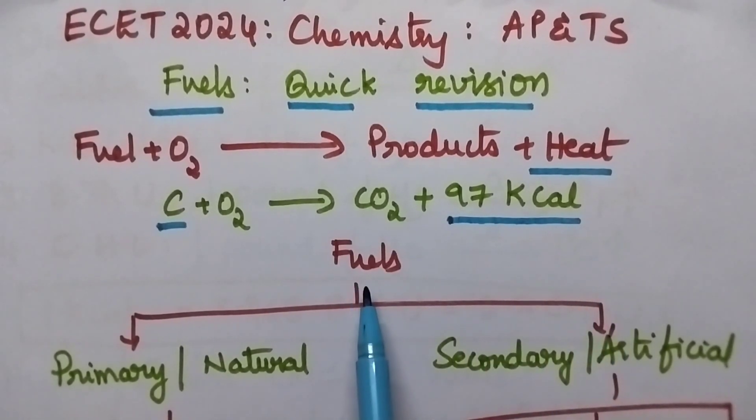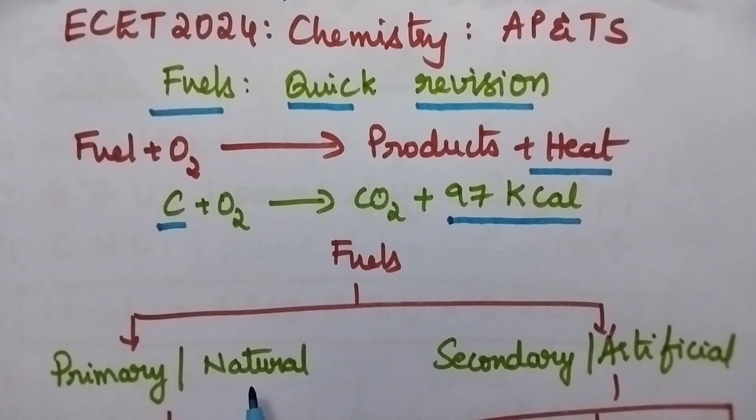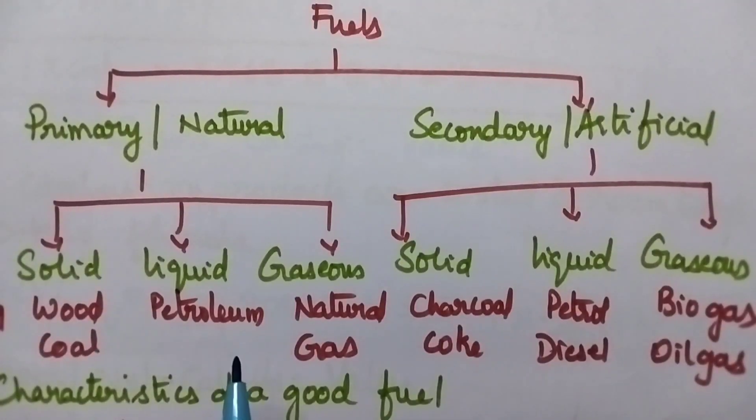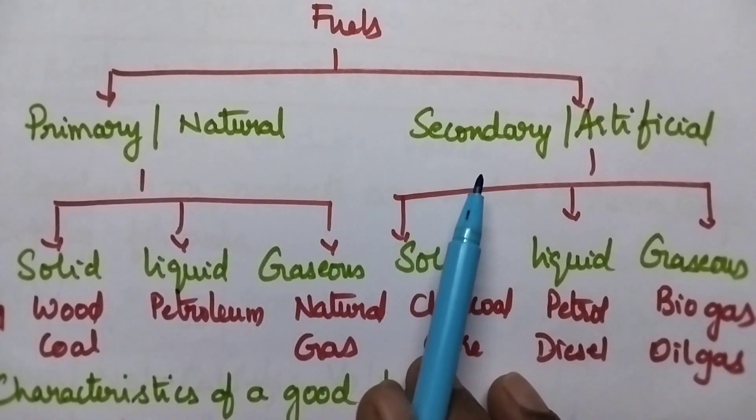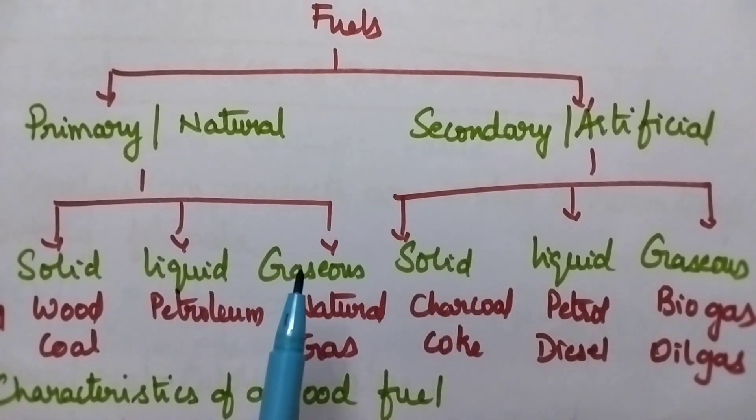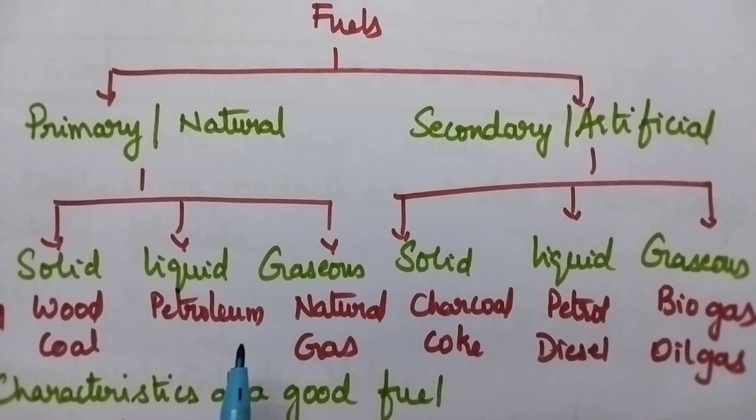These fuels can be classified into two types: primary fuels and secondary fuels. Primary fuels are also known as natural fuels or artificial fuels. Based upon the physical state, both primary and secondary fuels can be classified into three categories: solid, liquid and gaseous fuels. Coming to the primary fuels, good examples for solid fuels are wood, coal, and for liquid fuels petroleum. Coming to gaseous fuels, natural gas is a good example.